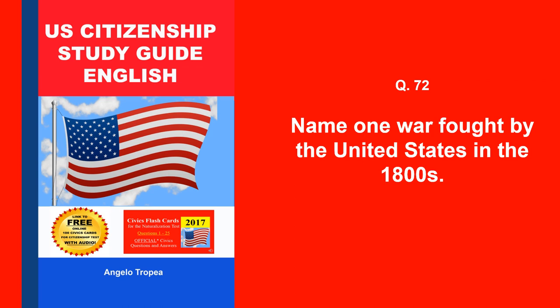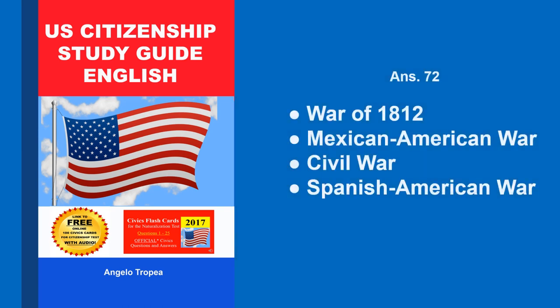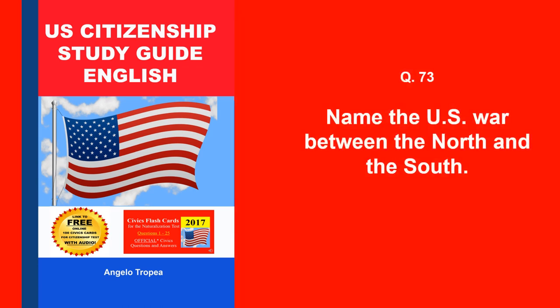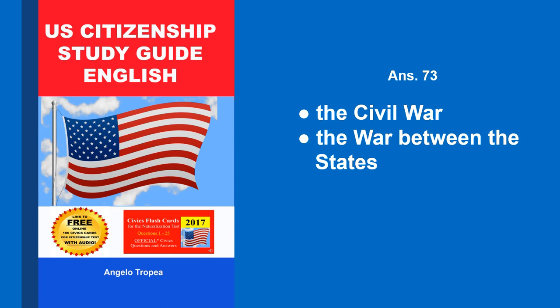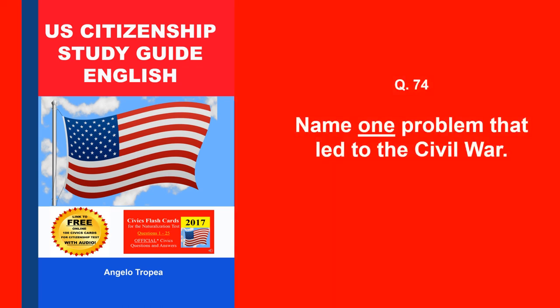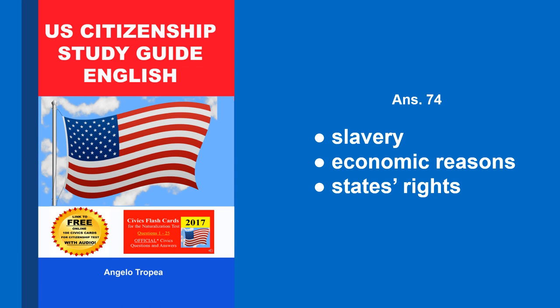Name one war fought by the United States in the 1800s. War of 1812, Mexican-American War, Civil War, Spanish-American War. Name the U.S. war between the North and the South. The Civil War, the war between the states. Name one problem that led to the Civil War. Slavery, economic reasons, states' rights.